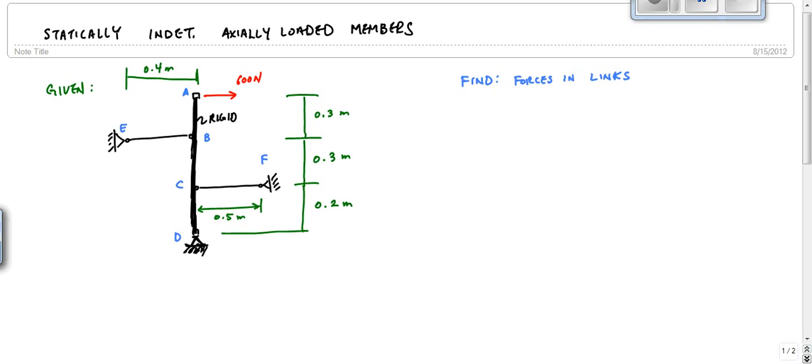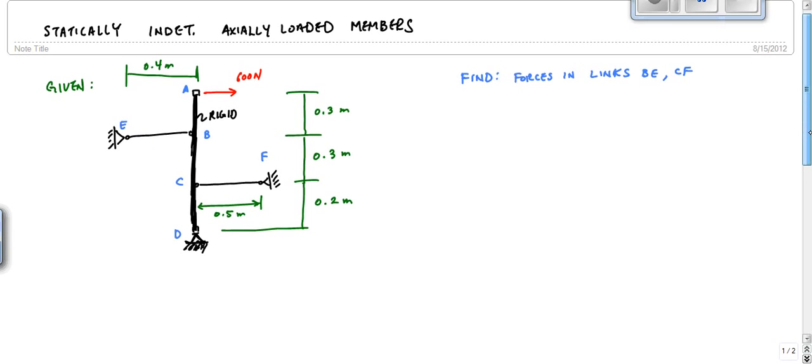And I want to find the forces in links BE and CF. And I have 600 newtons applied horizontally at A, and then three distances: 0.3 meters for segment AB, segment BC, and then 0.2 meters for segment CD. The length of CF is 0.5 and then 0.4 meters. Could I have made it any more complicated?